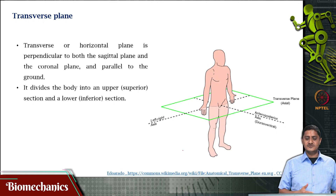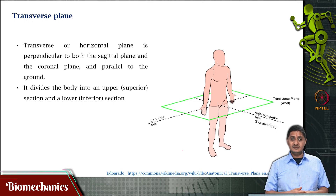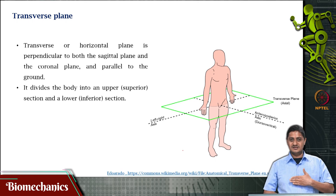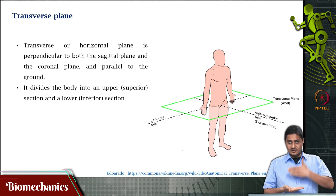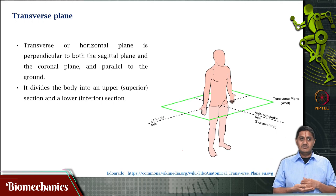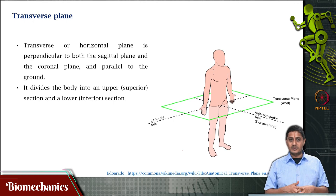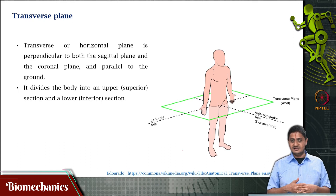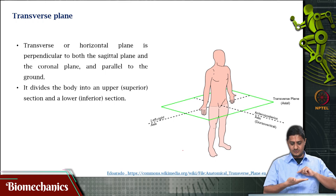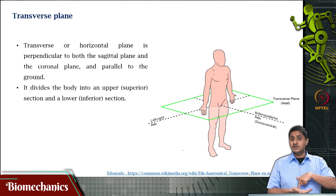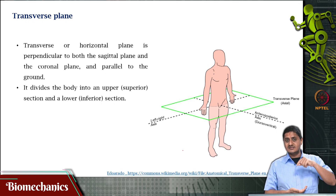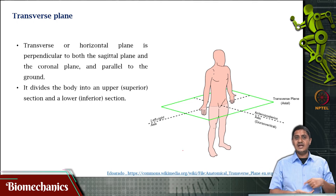The transverse plane is a horizontal plane, perpendicular to both the sagittal plane and the coronal plane, and it is parallel to the floor. It divides the body into an upper part and a lower part, not necessarily two halves. Within this plane you have the medial-lateral axis and the anterior-posterior axis. The axis perpendicular to the transverse plane is the cranio-caudal axis, going from the top to the bottom.